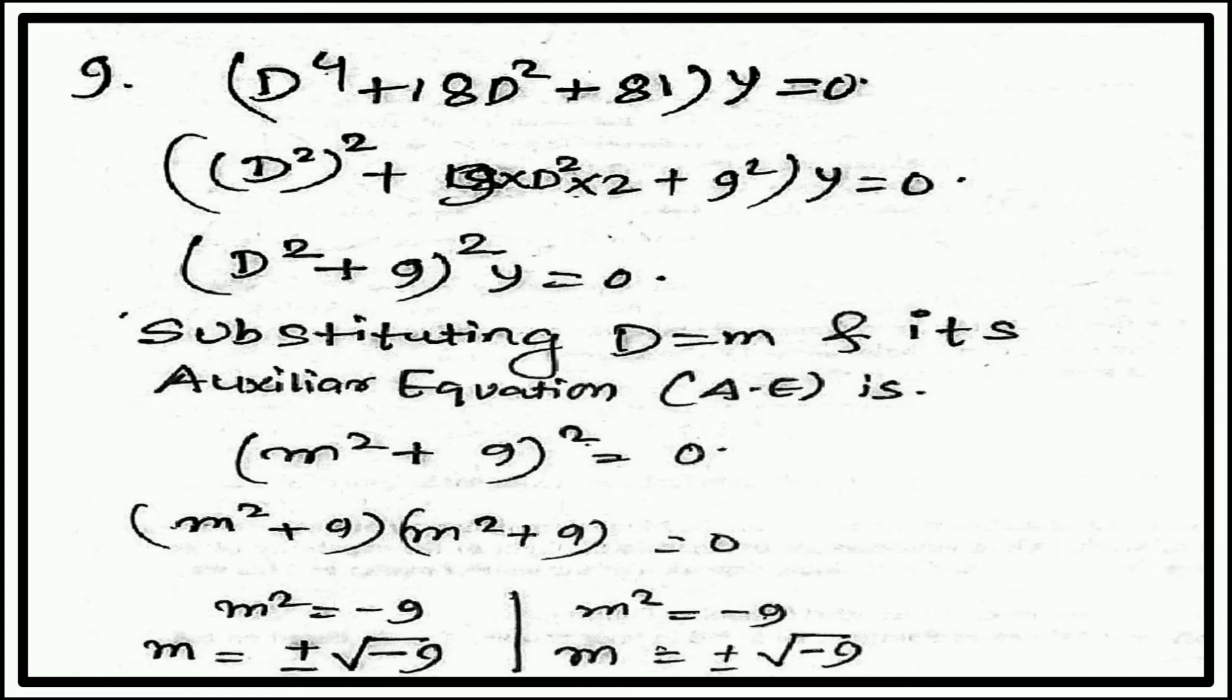Substituting D equal to m in the auxiliary equation: (m² plus 9)(m² plus 9) equal to 0. Two imaginary roots are equal and two imaginary roots are equal. We have two different types of roots which are equal: m equal to plus minus square root of minus 9.